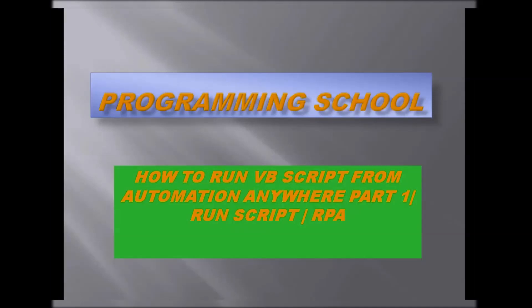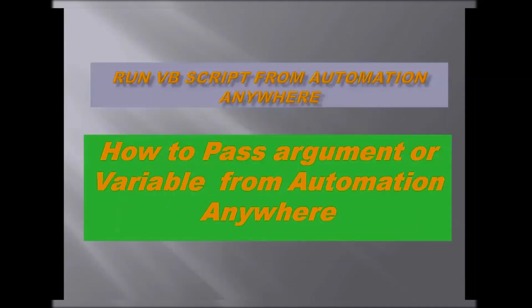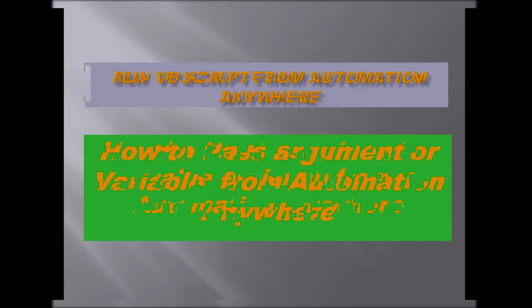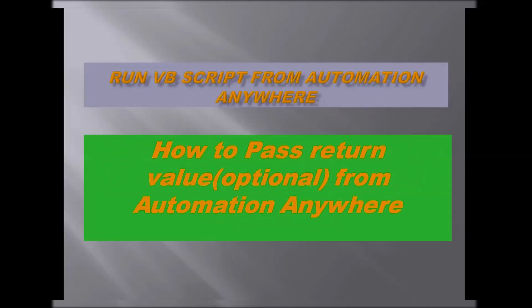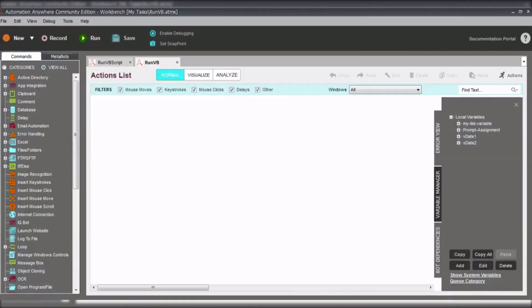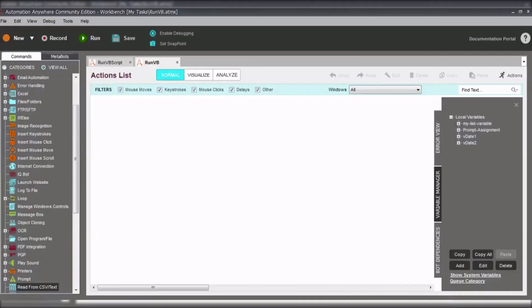Today I am going to explain how to run VBScript from Automation Anywhere. We'll cover how to pass argument variables from Automation Anywhere into the script, and how to pass return values back from the script into Automation Anywhere.